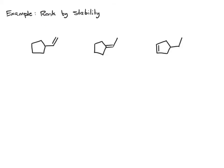In this example, we're given three alkene isomers, and we want to rank them in terms of stability. So the first thing that you might want to start with, if you're still getting used to doing this, is drawing in the hydrogen such that every alkene has four total bonds.